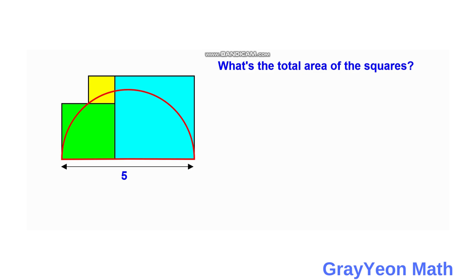First, we need to label the lengths of the squares. We label the blue square with side a, so this side is also a. We label the green square with side b, so this side is also b. The difference of the two squares gives a side of a minus b.